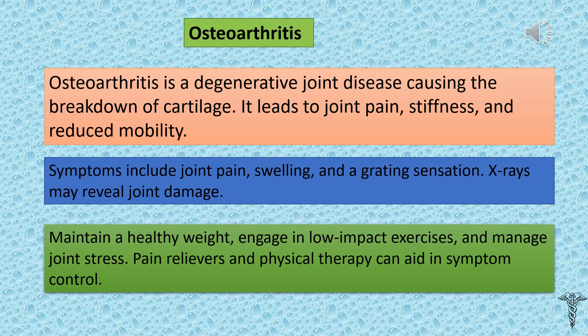Osteoarthritis is a degenerative joint disease causing the breakdown of cartilage, leading to joint pain, stiffness, and reduced mobility. Symptoms include joint pain, swelling, and a grating sensation. X-rays may reveal joint damage. For prevention, maintain a healthy weight, engage in low-impact exercises, and manage joint stress. Pain relievers and physical therapy can aid in symptom control.